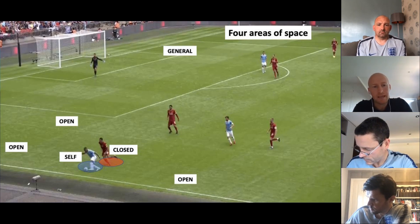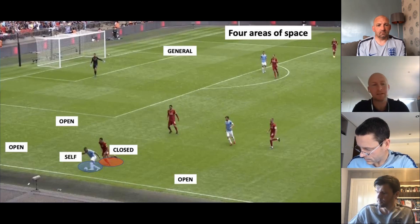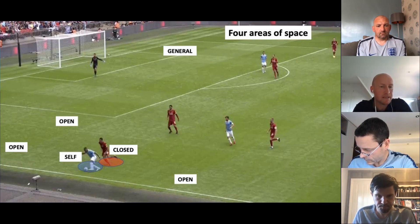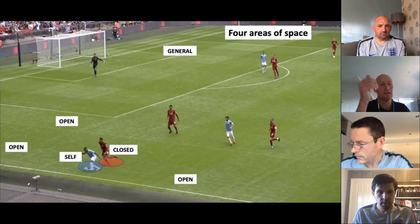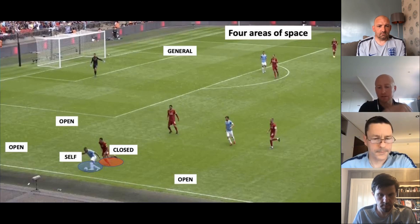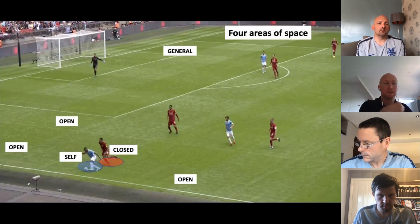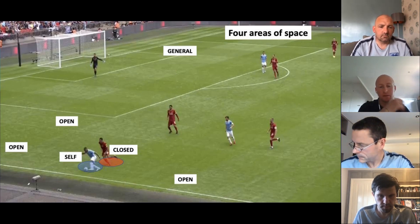In a 1v1 situation the player in particular with the ball is recognising where they can exploit the open space — space down the side, around the back, or across the front of the player. How we utilise that space varies based on what we take in, our experiences, and how we effectively move — going from slow to quick or quick to slow. This happens with and without the ball.